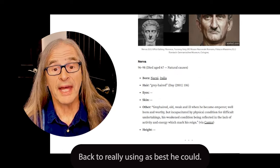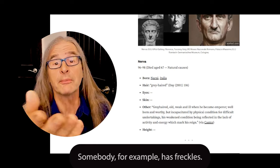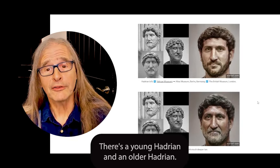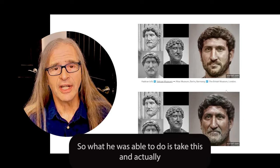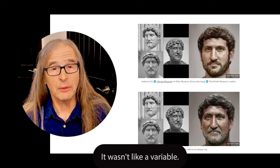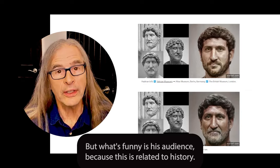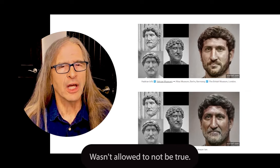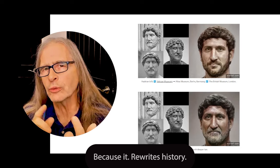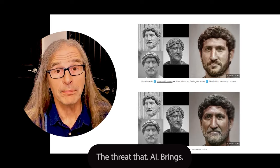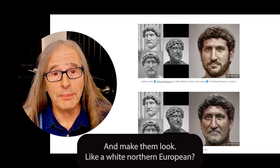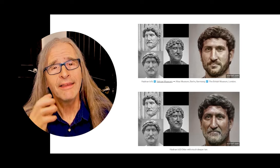He showed his sources and went back using his best efforts — little descriptions, for example somebody had freckles. Hadrian is a famous one, and if you're watching the video there's a young Hadrian and an older Hadrian. He was able to take this and try to get a really good image. With ArtBreeder he couldn't really pick ethnicity or skin tone — it wasn't a variable, maybe it's included today, but that gets really tricky. His audience, because this content was related to history, wasn't going to accept inaccuracy. As one commentator said, it's almost offensive because it rewrites history — are we just going to put a modern 21st century face on someone from 2,000 years ago?